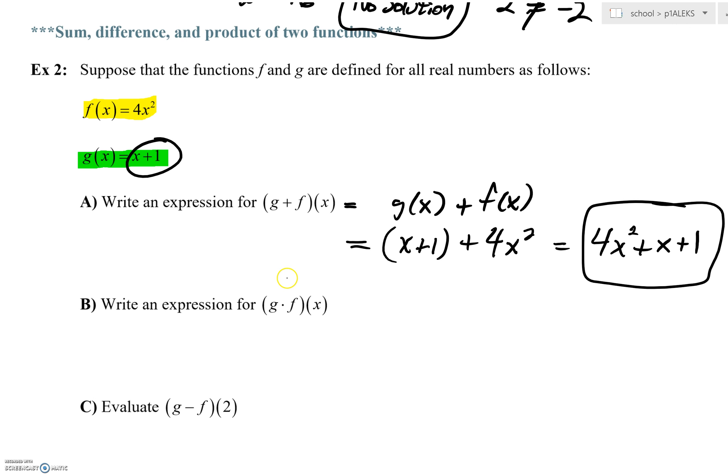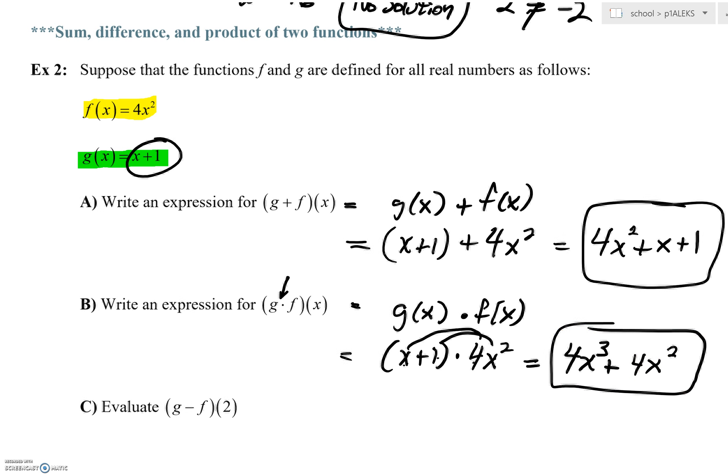Take a look right here in letter B. We have multiplication. This means g of x would get multiplied to f of x. Well, what is g of x? It's x plus 1. What about f of x? You'd have 4x squared. But, here we do want to distribute. 4x squared times x is 4x to the third. 4x squared times 1 is just a 4x squared. And, you're done.